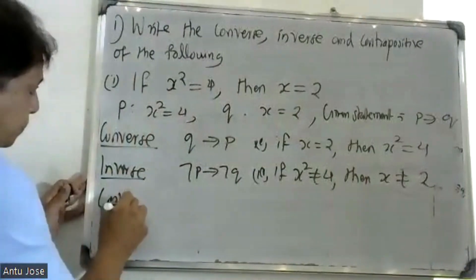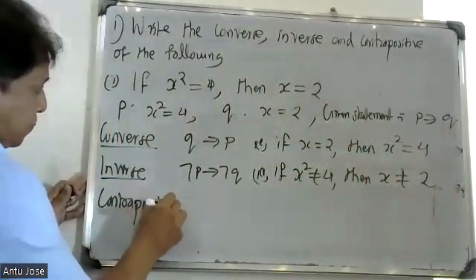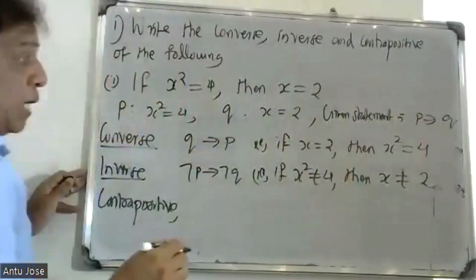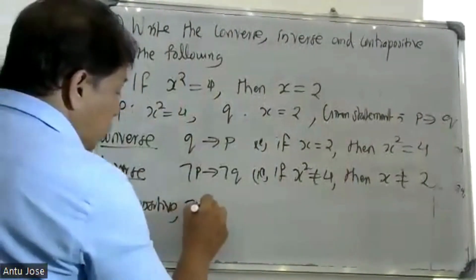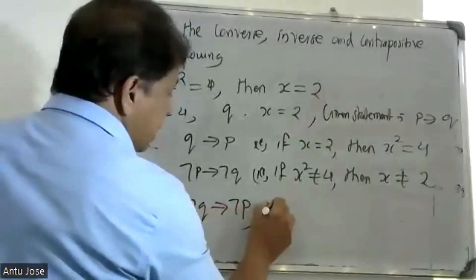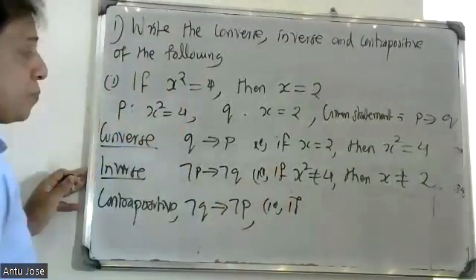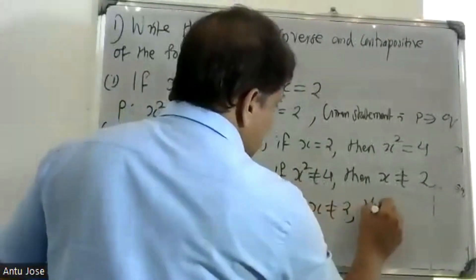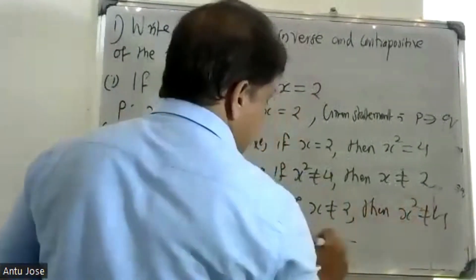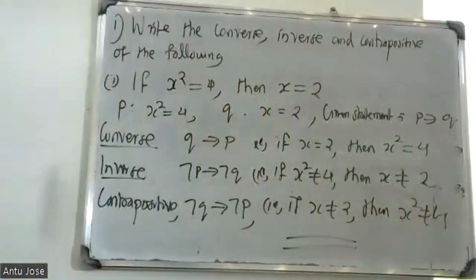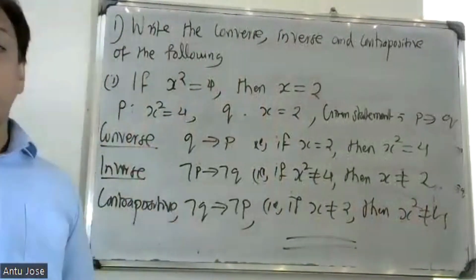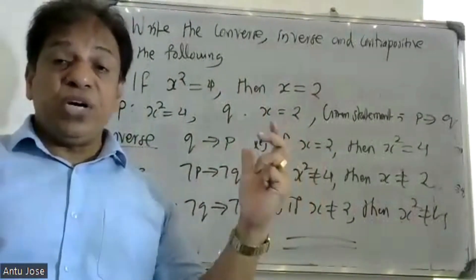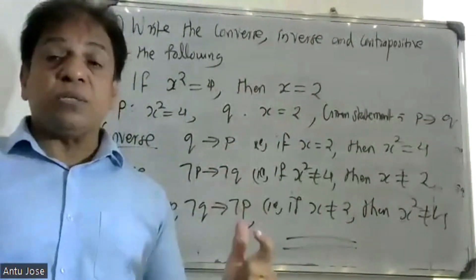The contrapositive: if x is not equal to 2, then x squared is not equal to 4.